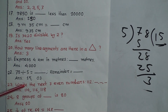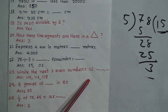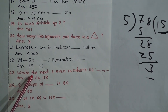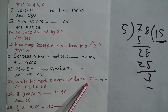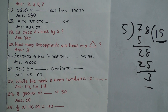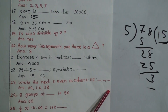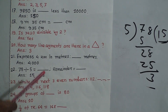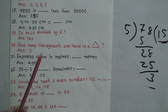Question 23: Write the next 3 even numbers after 112. The next three even numbers are 114, 116, and 118.